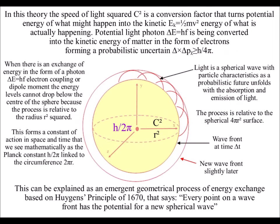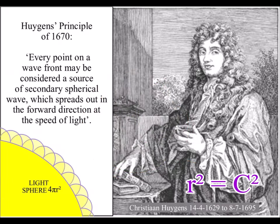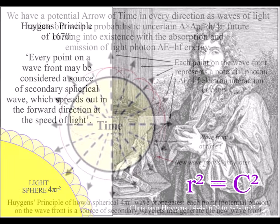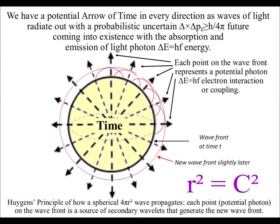The idea of squaring the speed of light can be based on Huygens' principle that says every point on a light wave front has the potential for a new spherical light wave. We have to square the radius of the light sphere because each point on the surface of the sphere represents a potential photon-electron interaction or coupling.